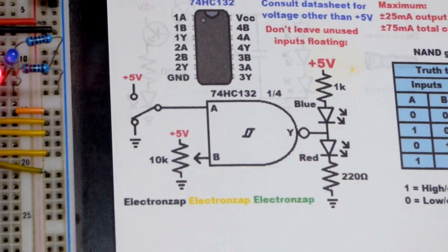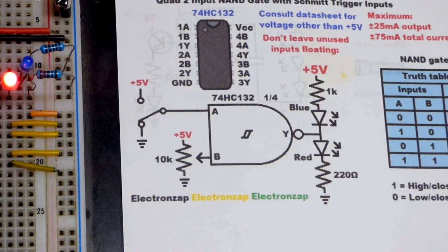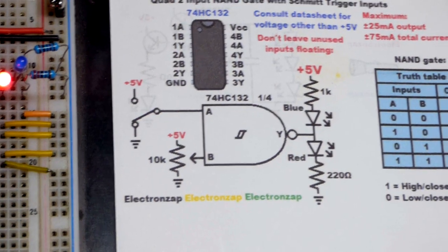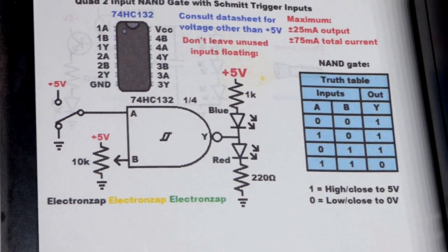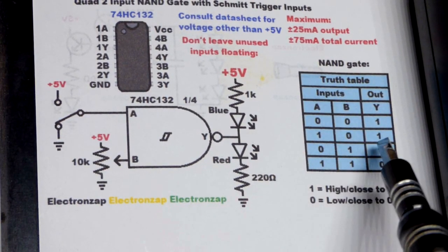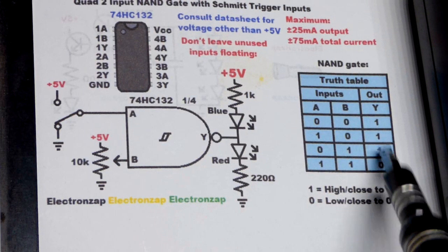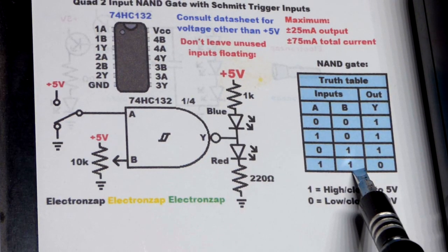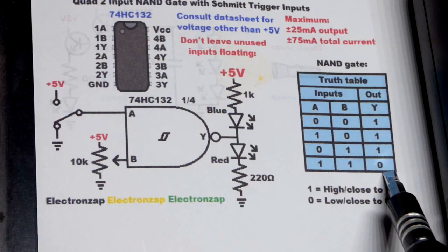I drew this diagram a long time ago. So when it comes to the NAND gate, if any input is low, then the output is high. Pretty straightforward. If all inputs are high, then the output will be low.